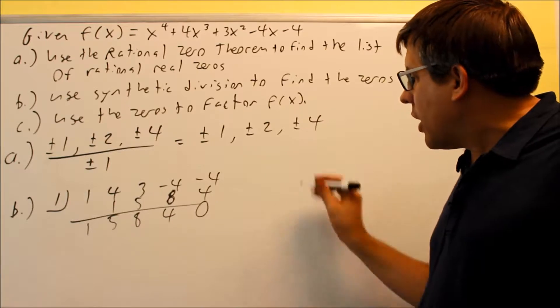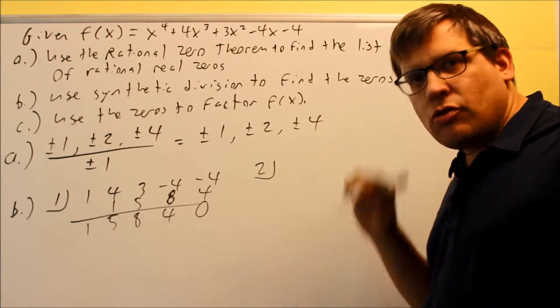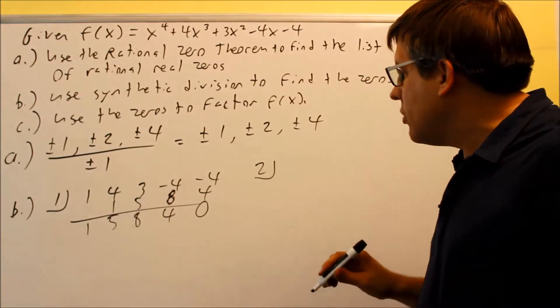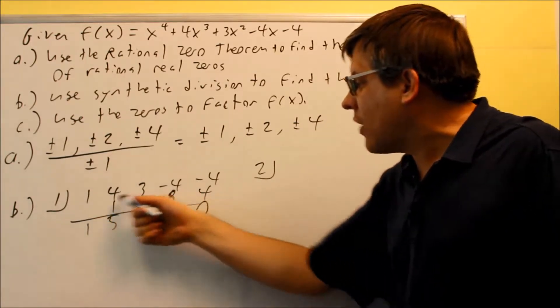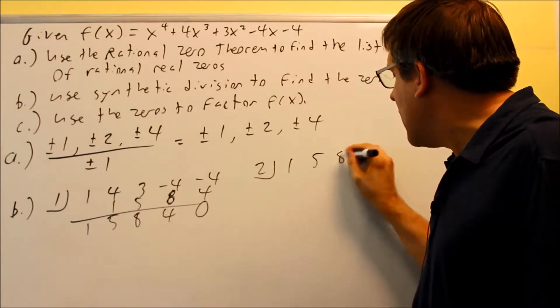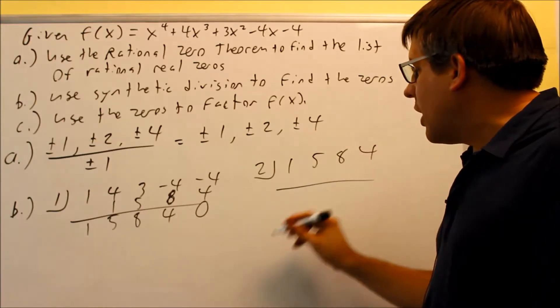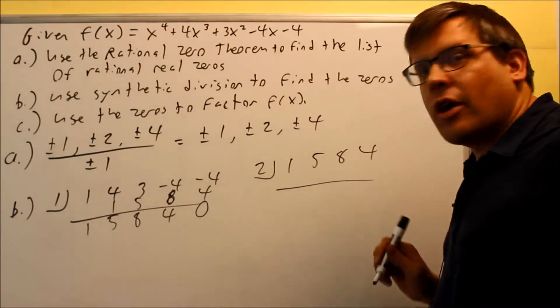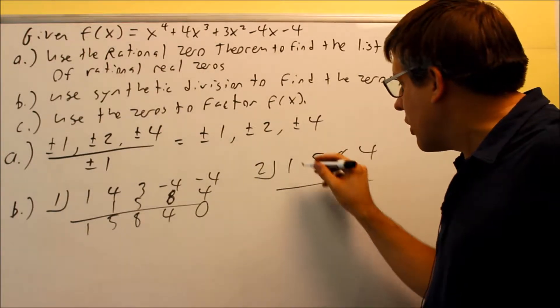All right, so the next one I would want to try is, maybe I would try two next. Or again, I can look at my graph and see where it actually crosses. I'll try two next. I'm going to use the answers I got for the previous one, one, five, eight, four. And then I'm going to go ahead and go through this. If it really is a zero, I should get zero as my remainder. So let's check that again.